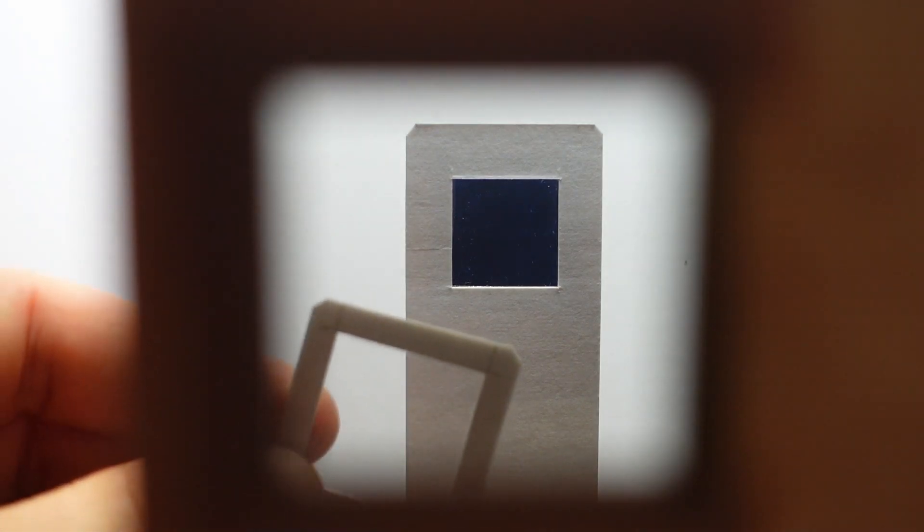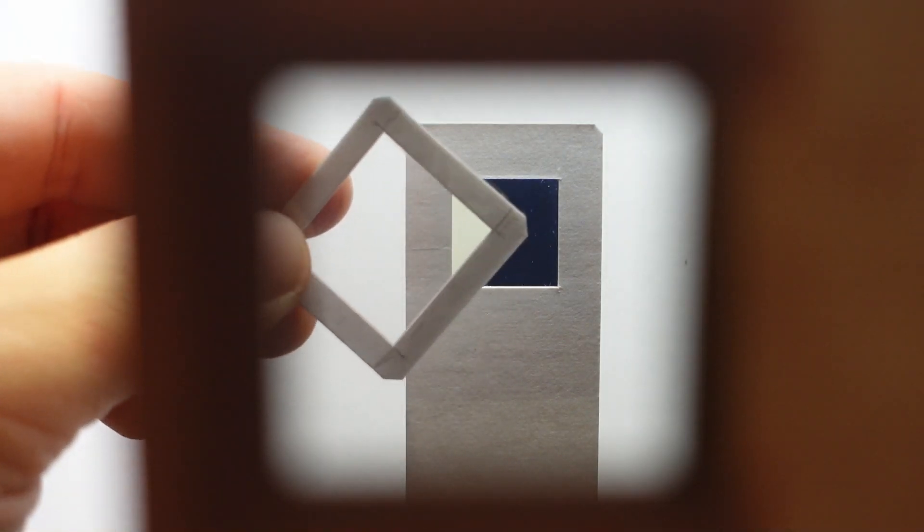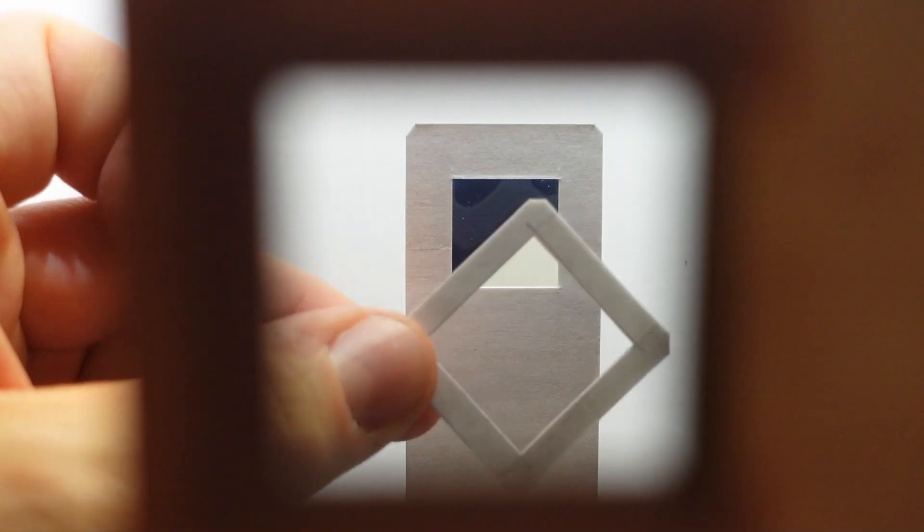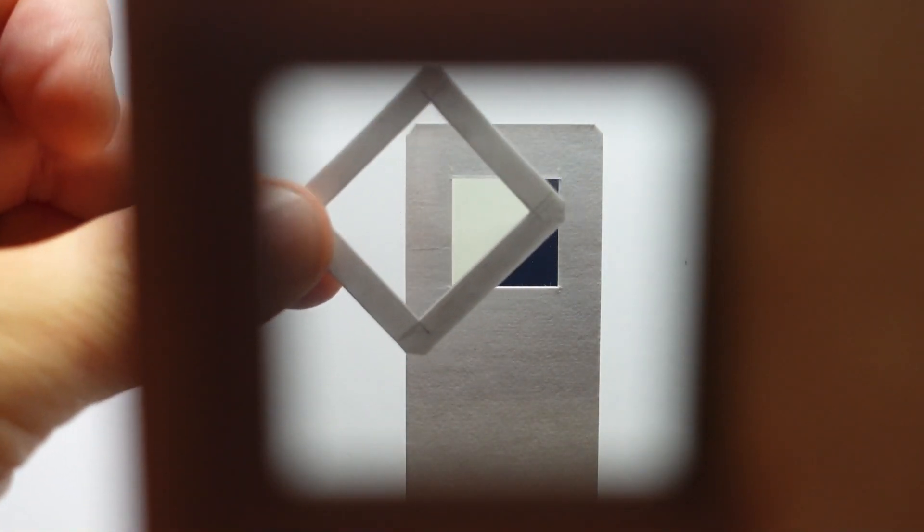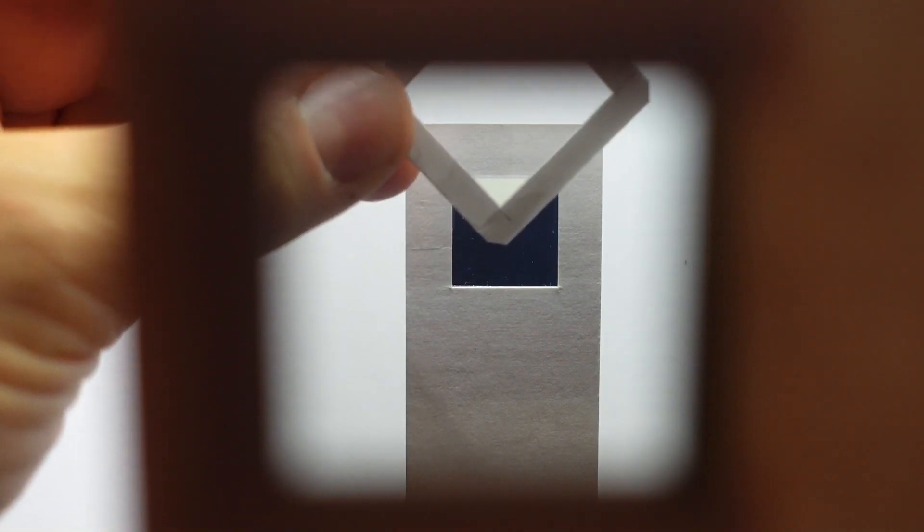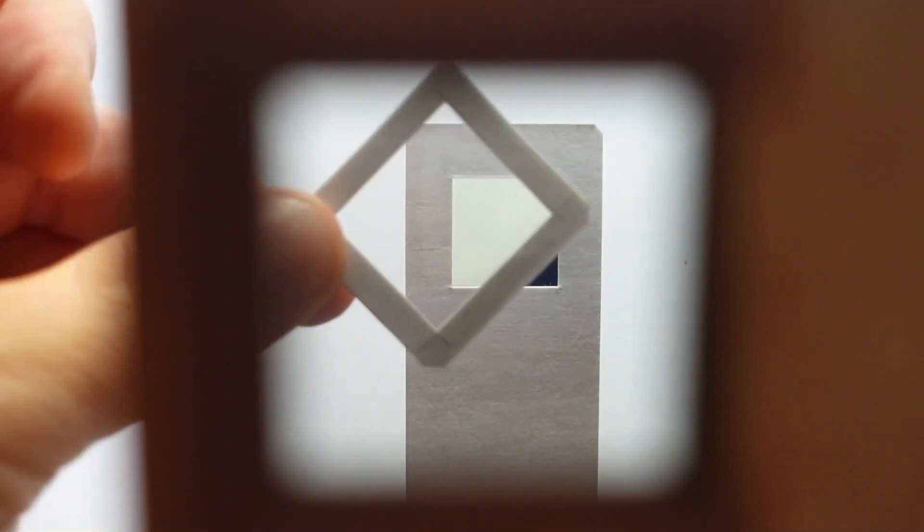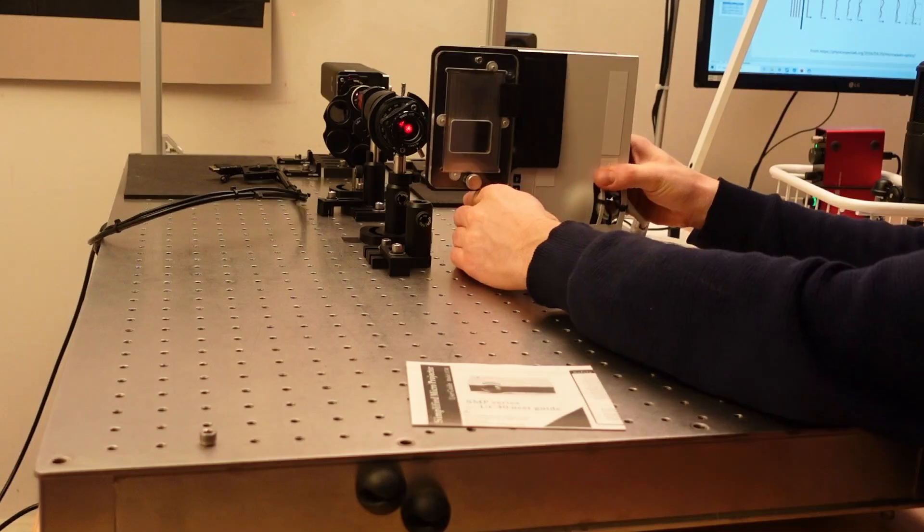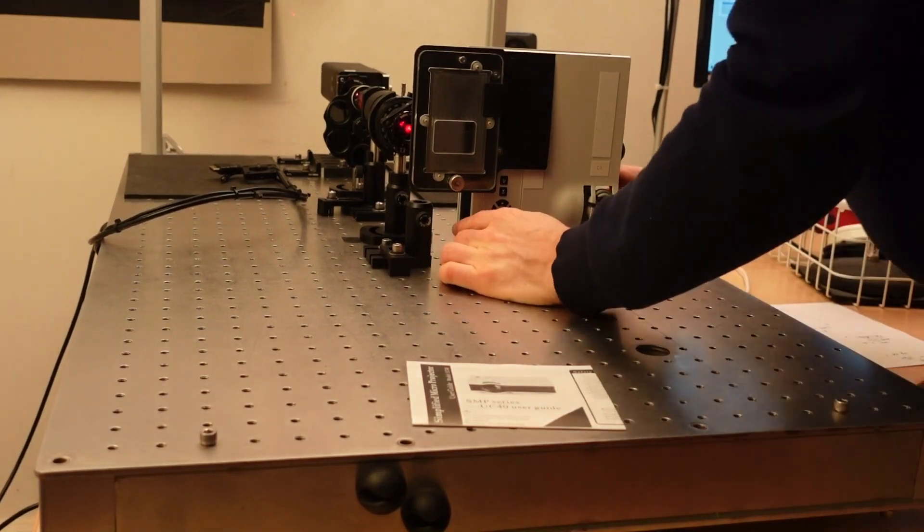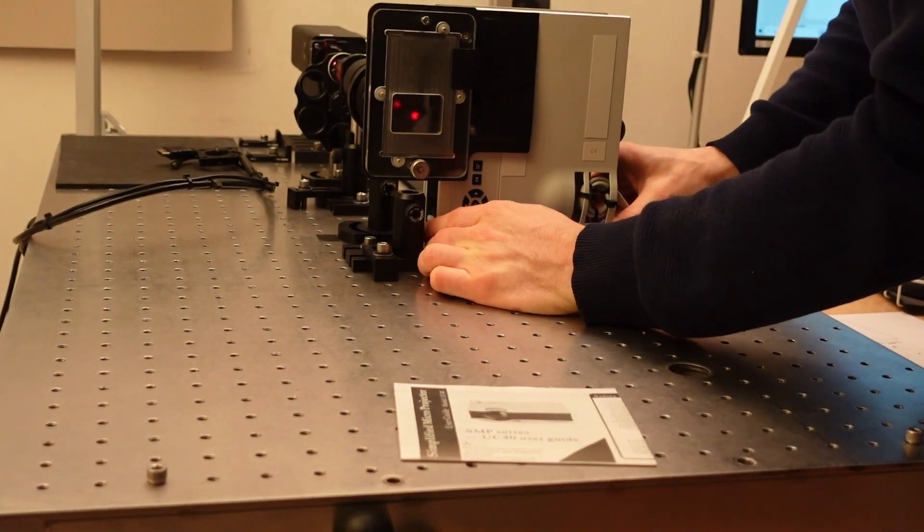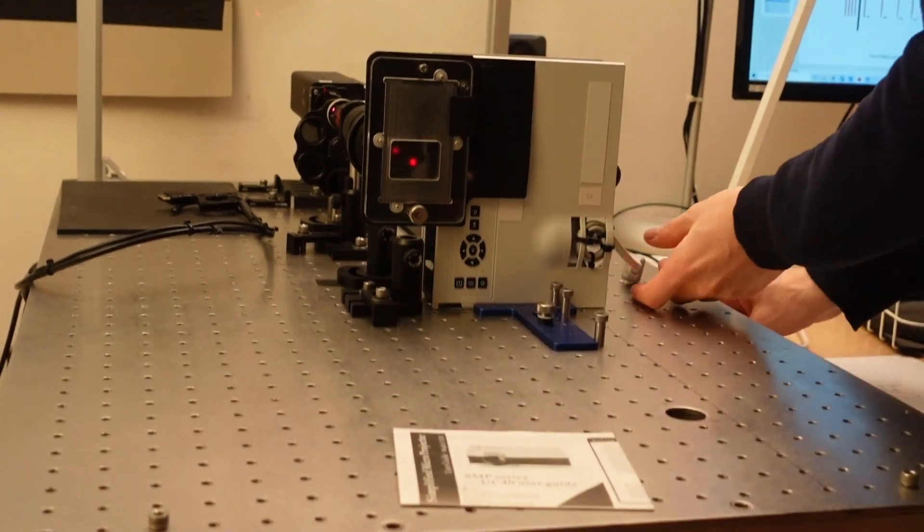But now, we're going to take the second polarizer, and we're going to look through it, and it turns that light dark because all of this light is vertically polarized. So when we look at it through a horizontally polarized filter, it's all dark. But now, what we're going to do is pass this piece of film over the dark spot, and we're going to see that that actually rotates the light so that now we can see it even through the second polarizer.